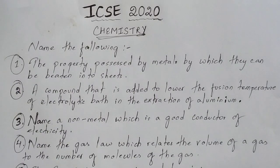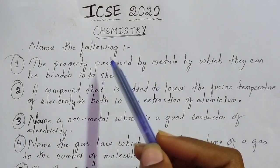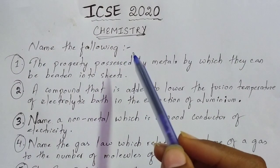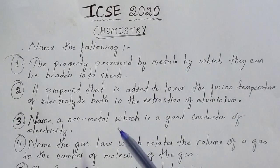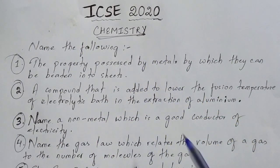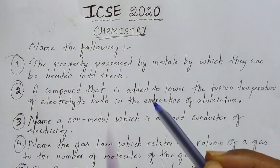Hi guys, this is Barsha and you are watching Mastermind. In this session we are going to discuss important questions from chemistry — specifically 'name the following' type of questions which are important for your ICSE 2020 board examination. Please go through all these questions carefully, as these are the type of questions mostly asked in your board examinations.